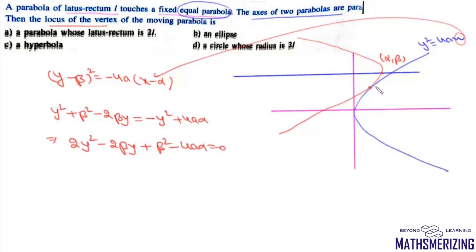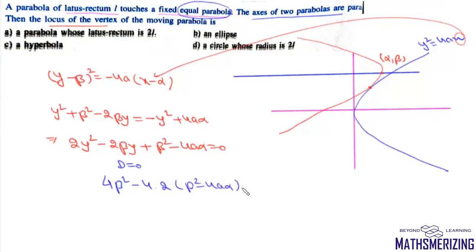Since the two parabolas touch each other, there should be only one point of intersection, meaning this quadratic equation should have exactly one root. So the discriminant D must equal zero. That gives b² = 4β², a = 2, c = β² − 4aα, and setting D = 0.